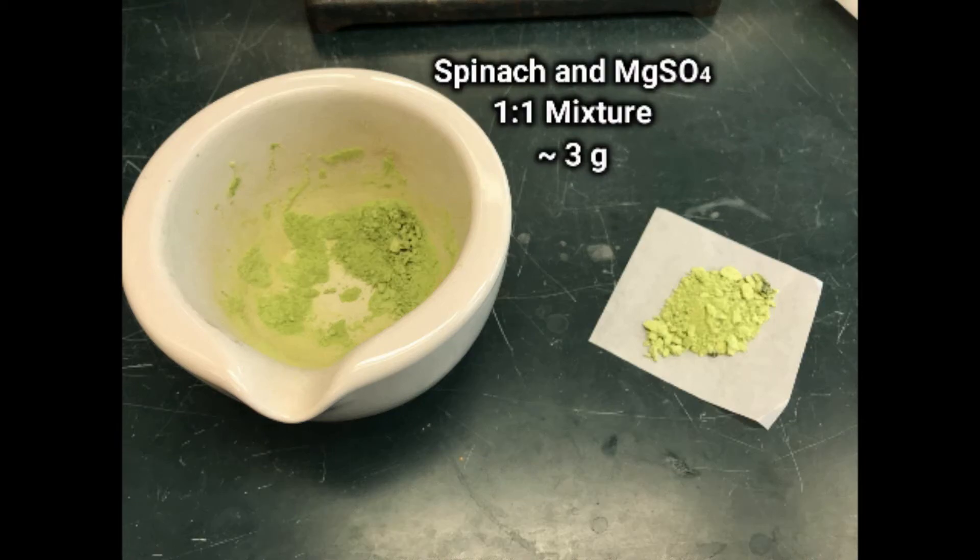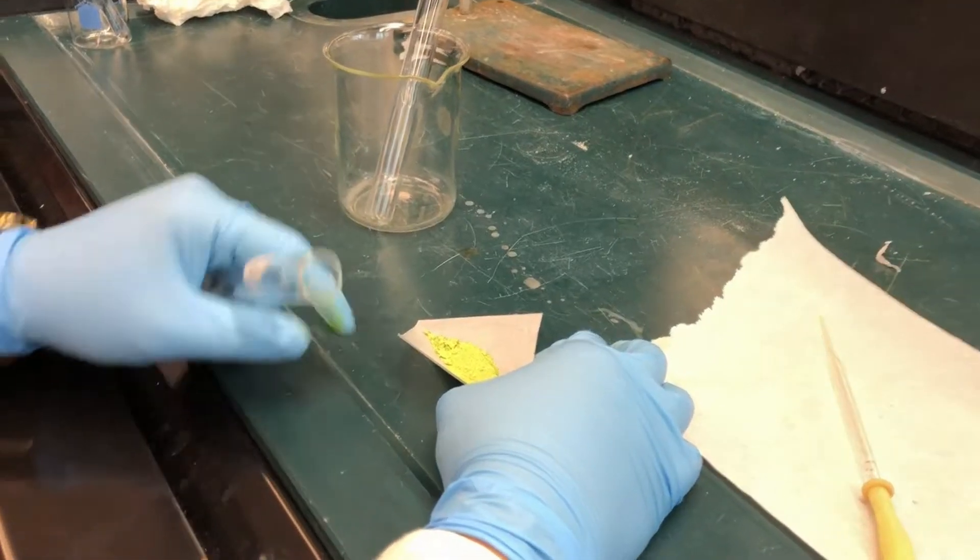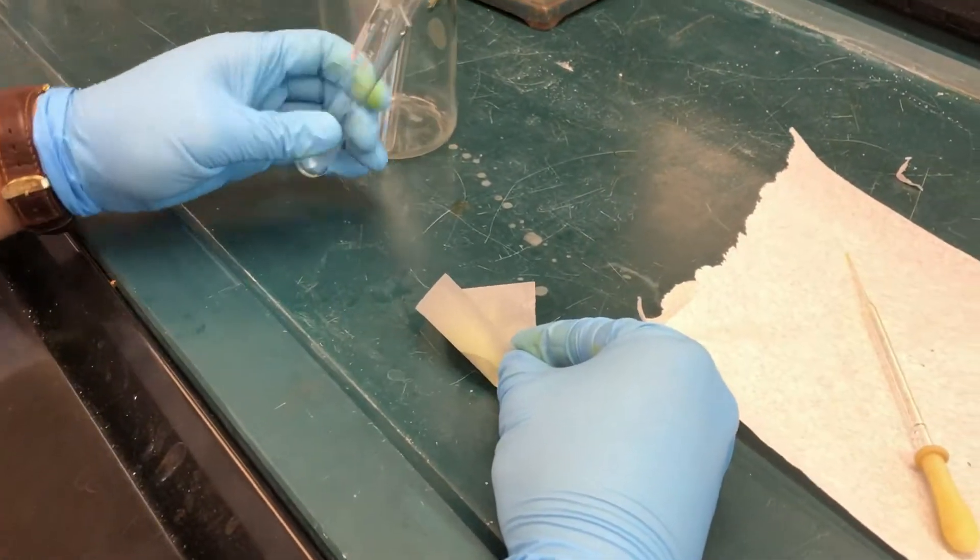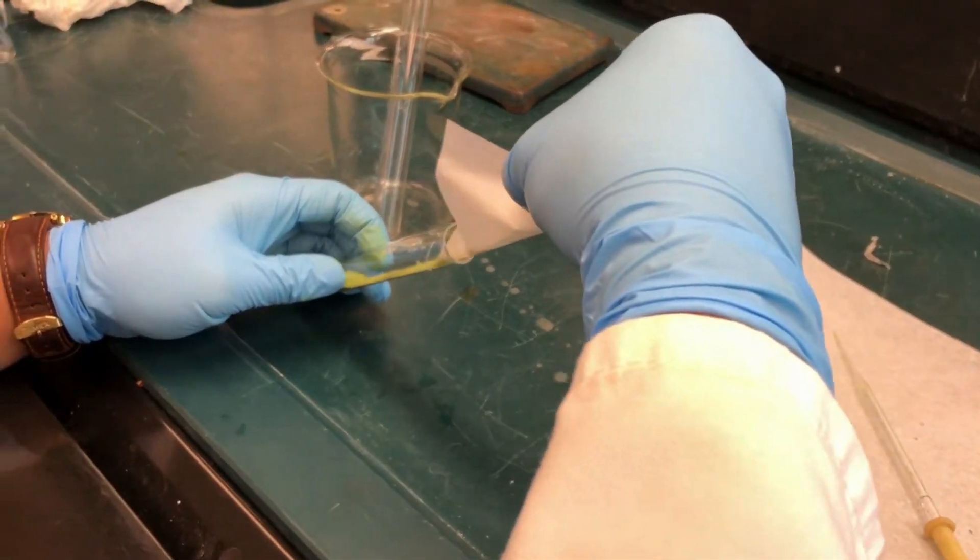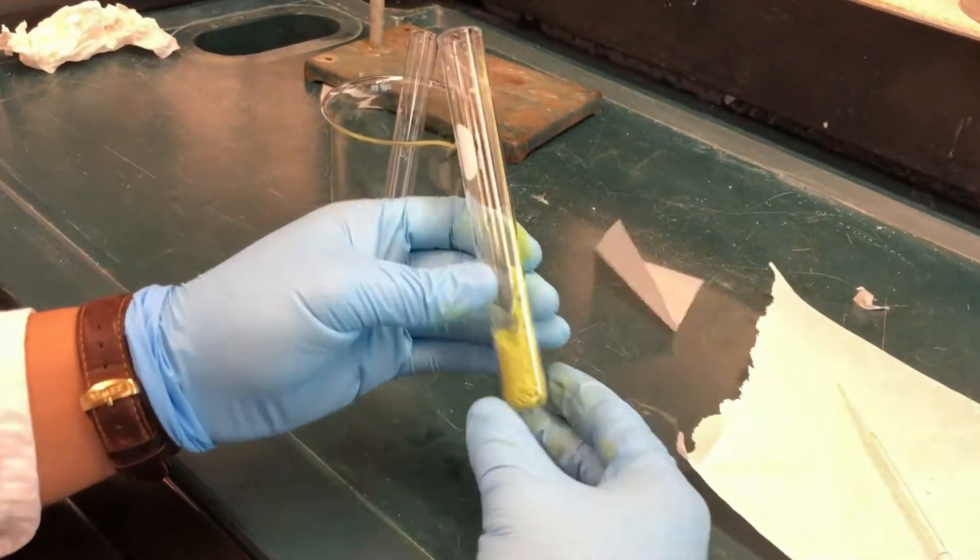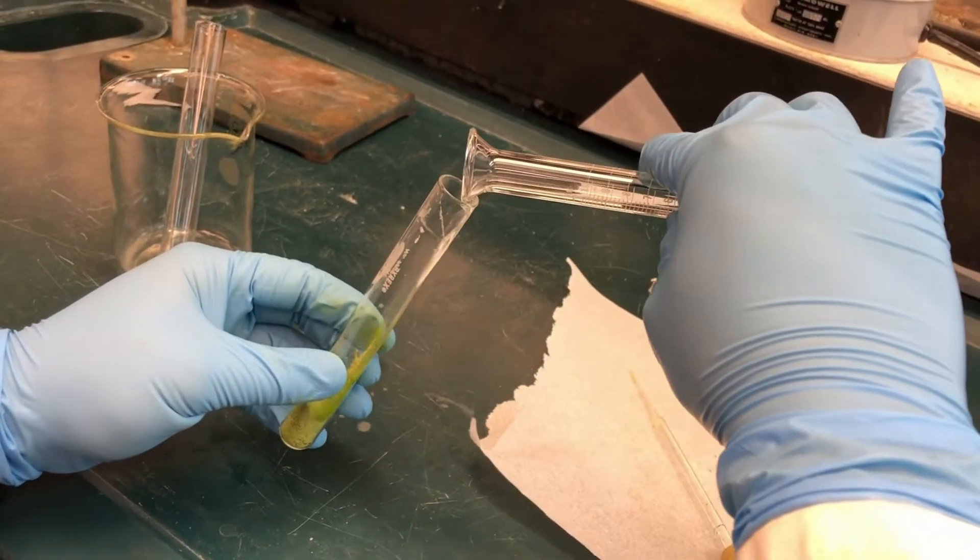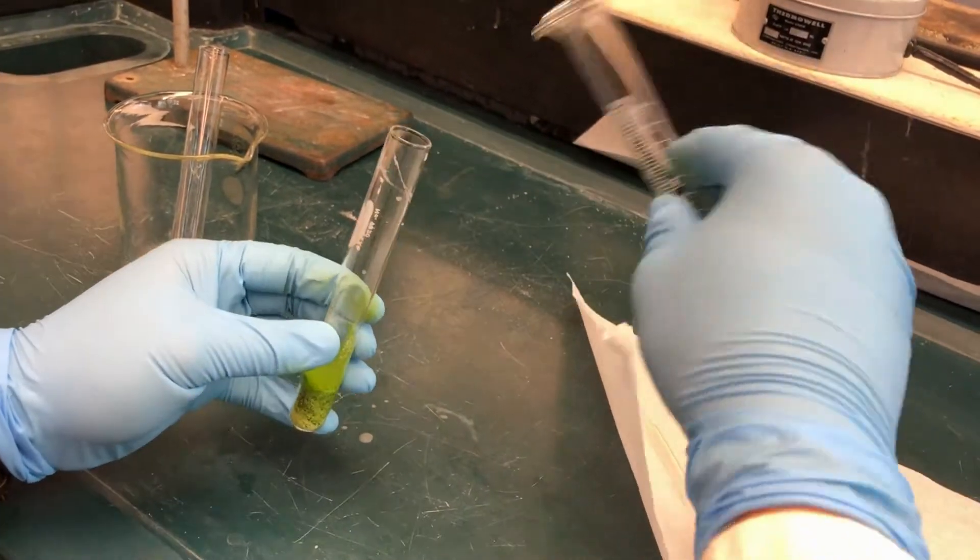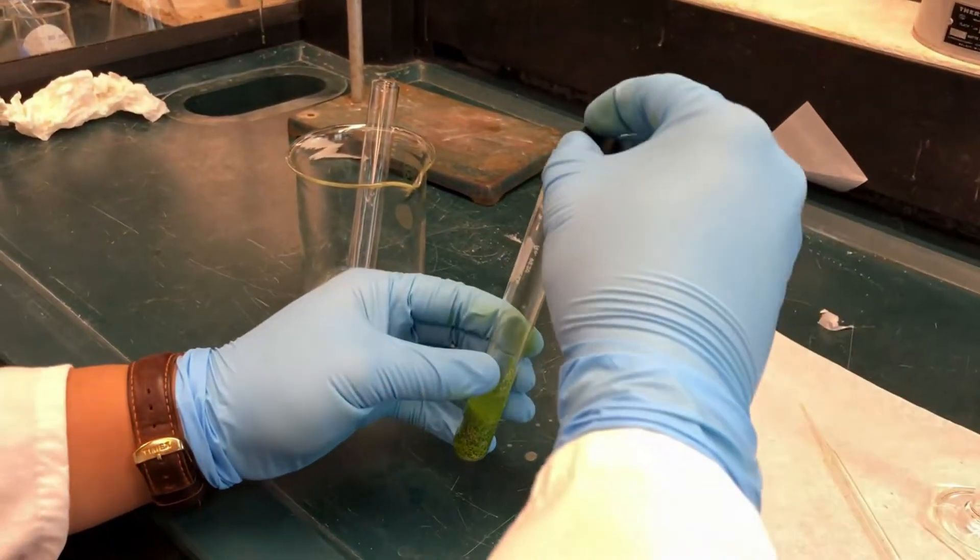Next, weigh about 3 grams of the spinach mixture and carefully add it to a small test tube. You can use a spatula or make a funnel from the weighing paper. Add 5 milliliters of acetone to the test tube and stopper with a silicone stopper.